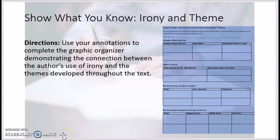For your Show What You Know, you are going to use your annotations to complete the graphic organizer that demonstrates the connection between the author's use of irony and the themes developed throughout the text. The first part of the graphic organizer asks you to identify some examples of irony — you can use your annotations to do that. Then you are going to think about theme, which you've already done in your Think About It section. You can take the themes and theme statements and then demonstrate how that theme is developed through evidence in the text. The third section is going to ask you to explain the relationship between theme and irony, and finally, how the themes are developed over the beginning, middle, and end of the text.